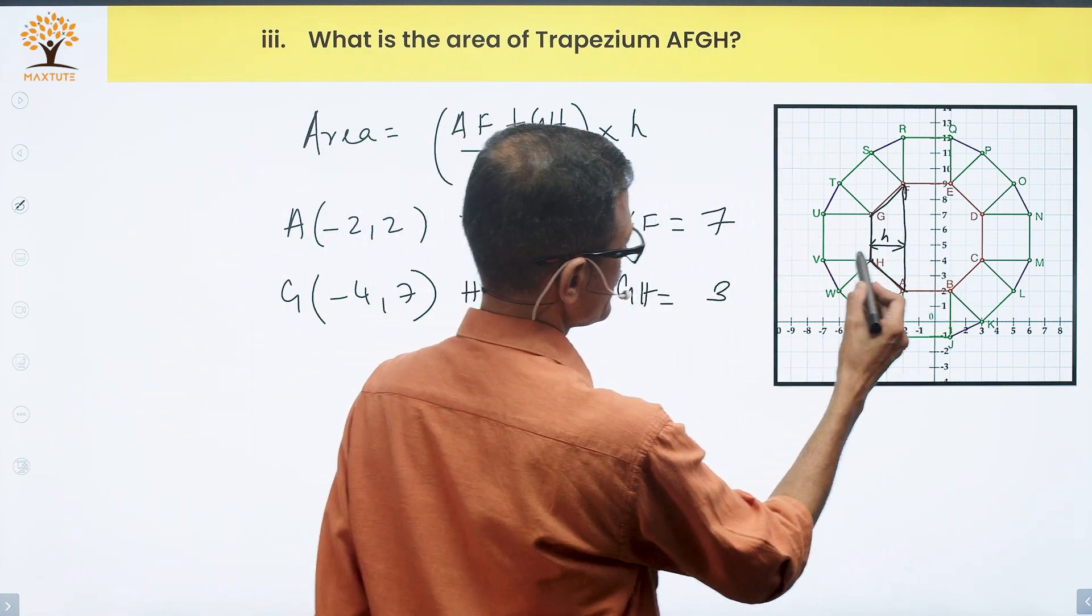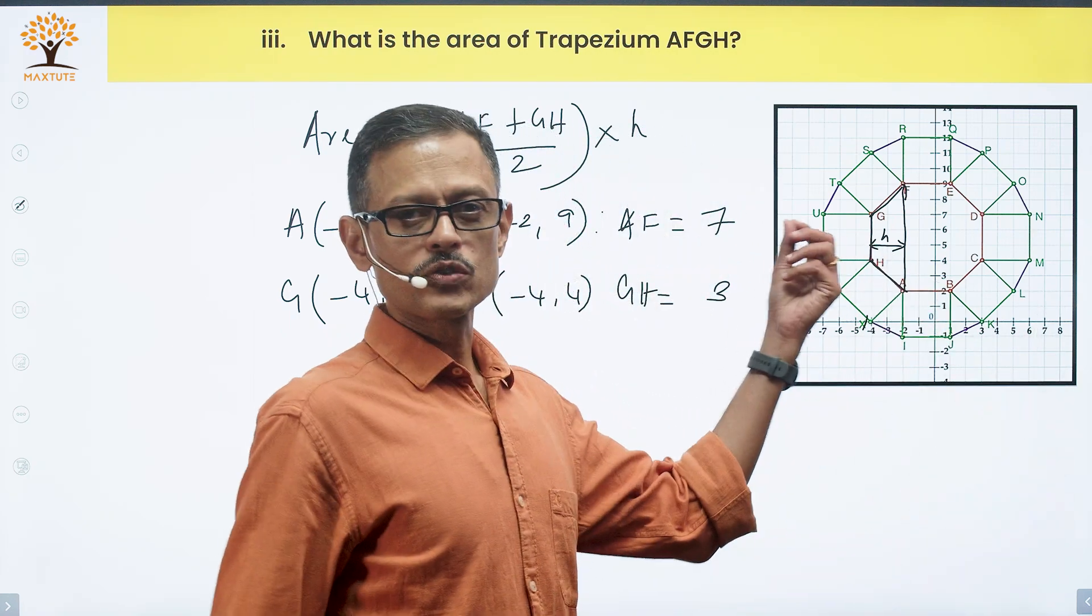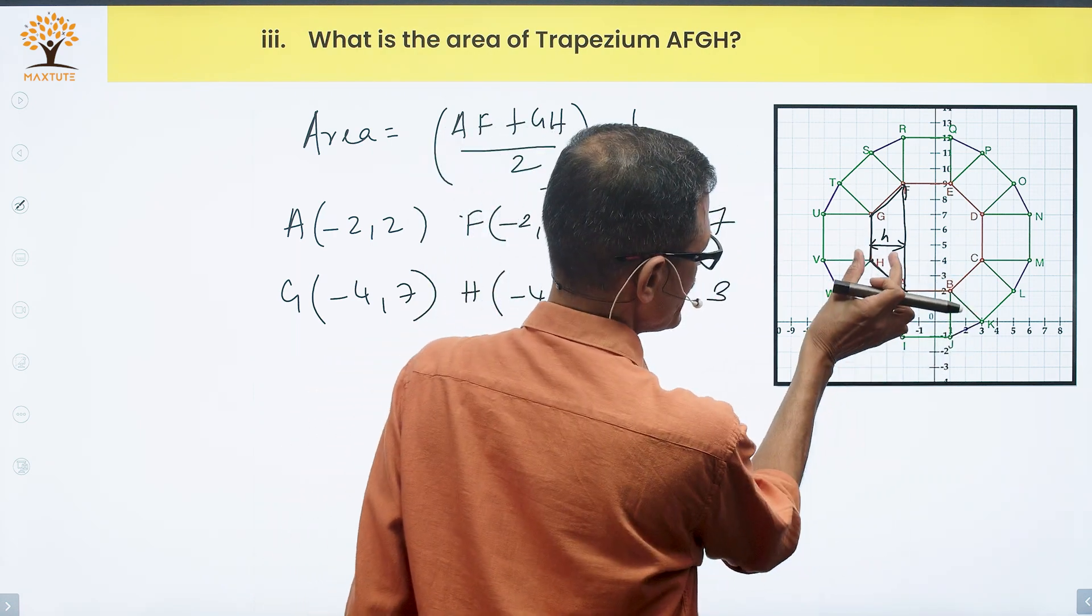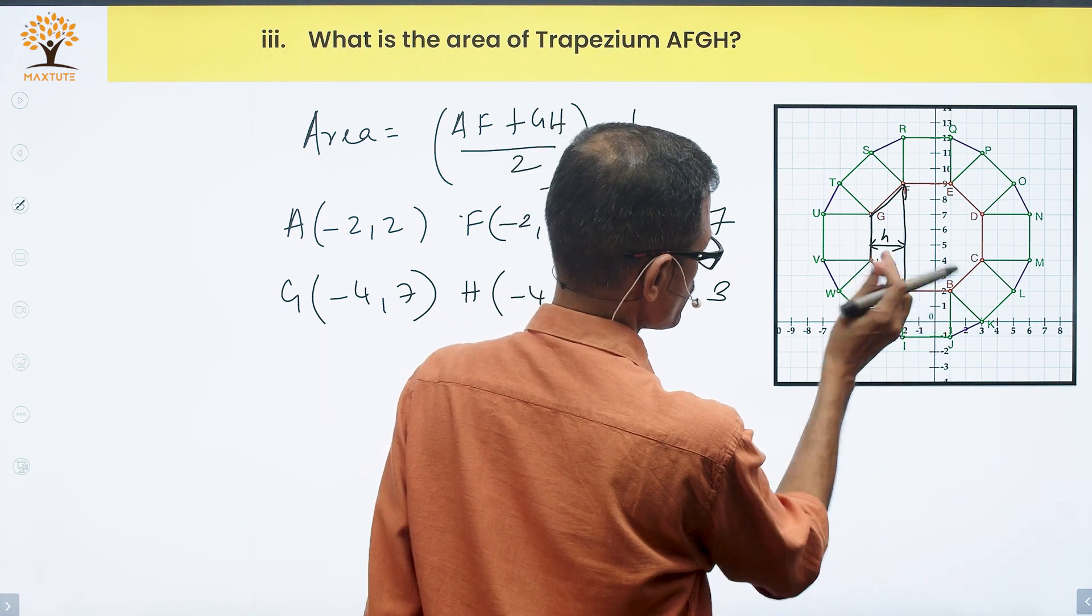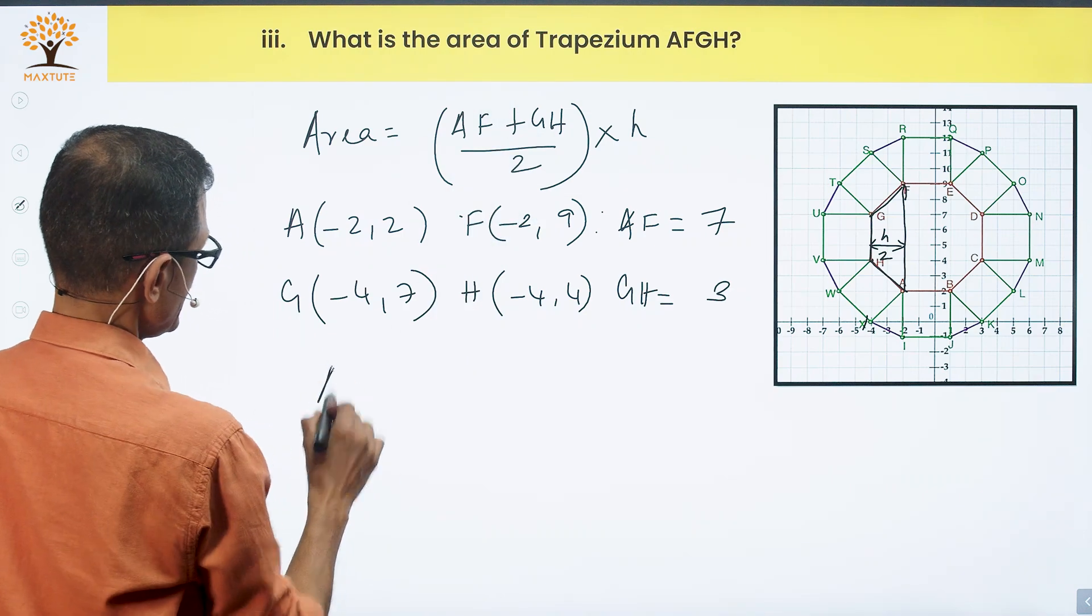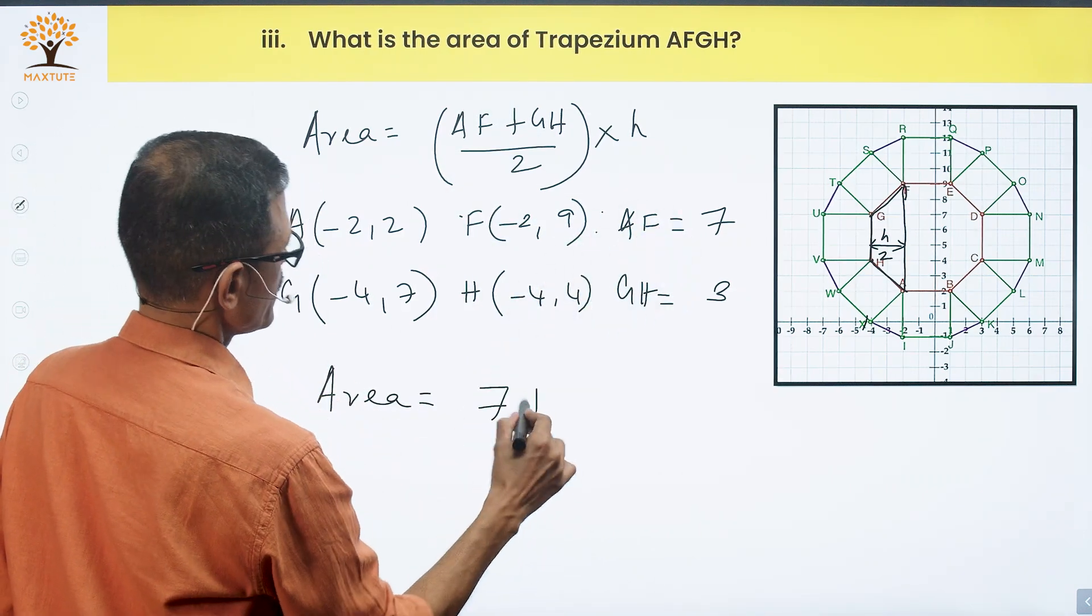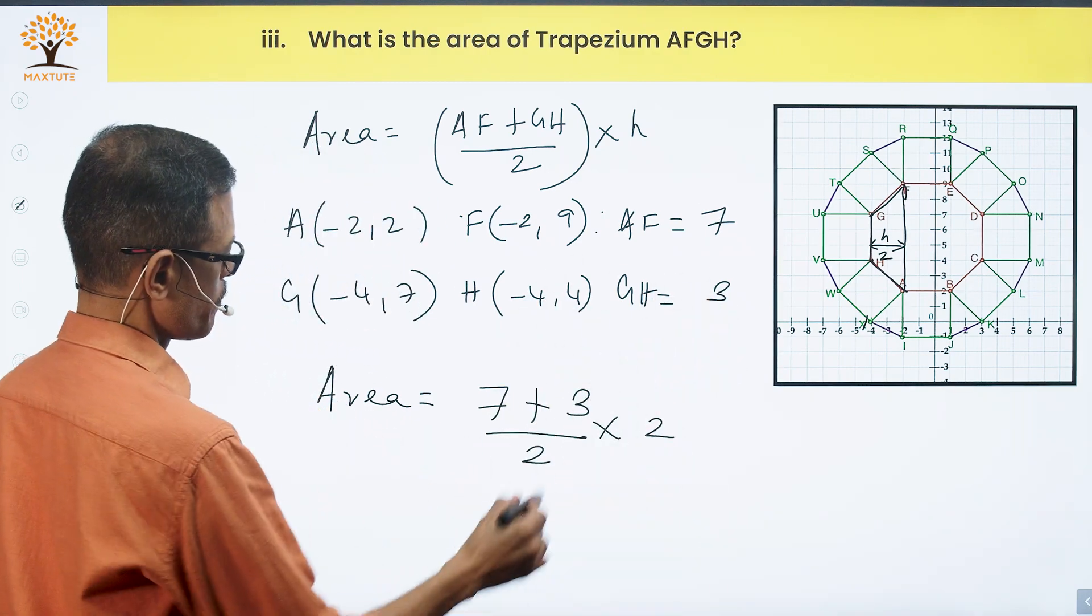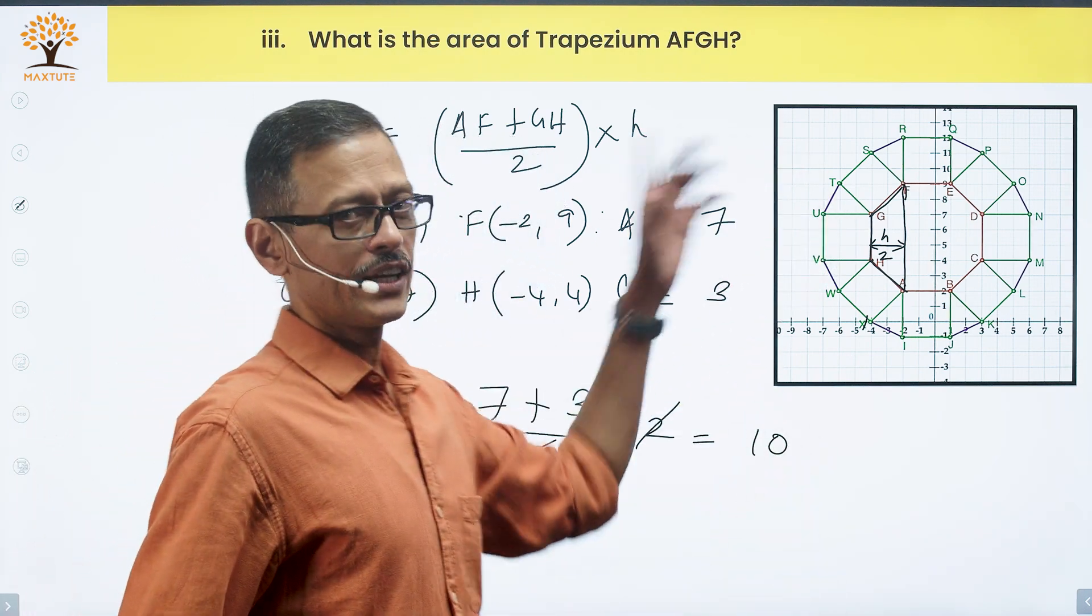Only thing left is the height. This height - draw this line - is parallel to the X-axis. Therefore, its Y-coordinate is the same anywhere you look at it. We need to find the difference in X-coordinates, which is minus 4 minus minus 2. This equals 2 units. Height equals 2 units. Plug all of that: Area equals AF which is 7 plus GH which is 3, divided by 2, into the height which is 2. 2 gets cancelled to leave us with 10 square units as the area of this trapezium.